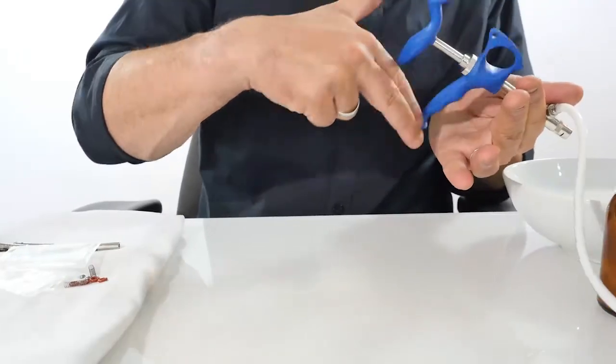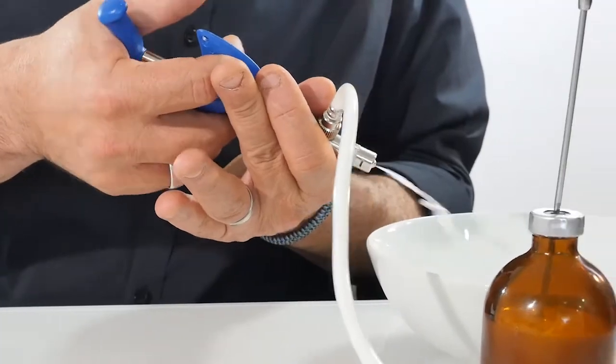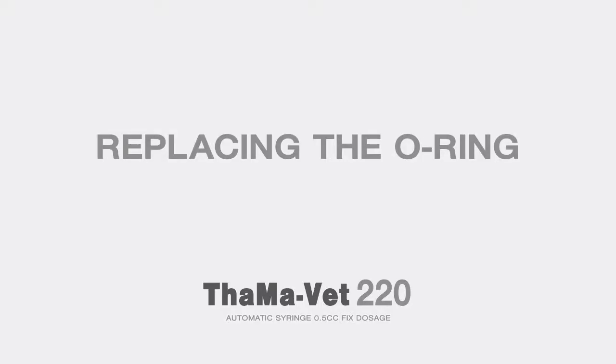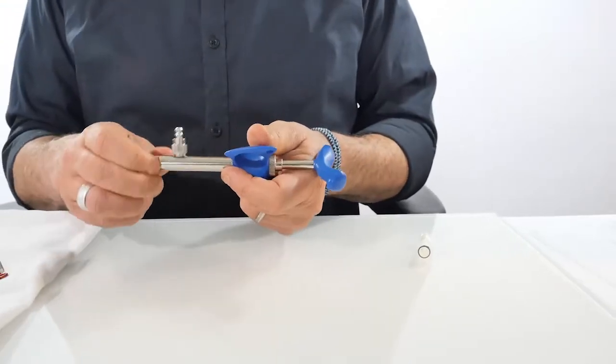TAMA 220 - Replacing the o-ring: You may need to replace the o-ring if it gets lost or damaged.